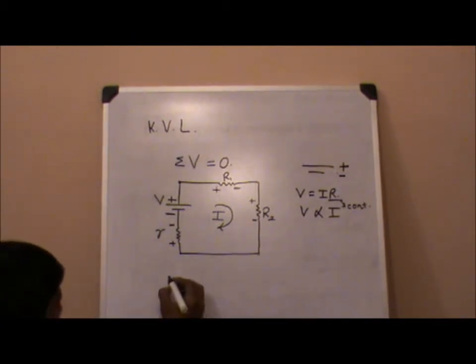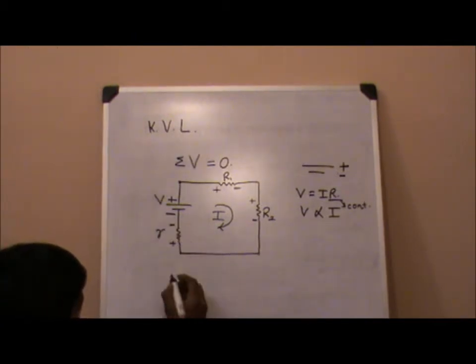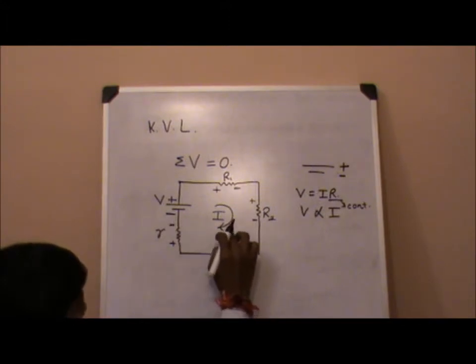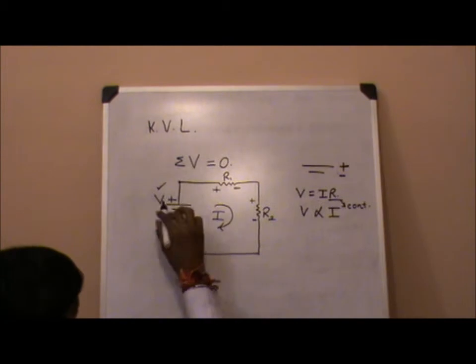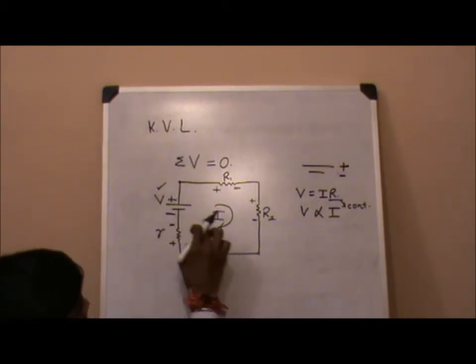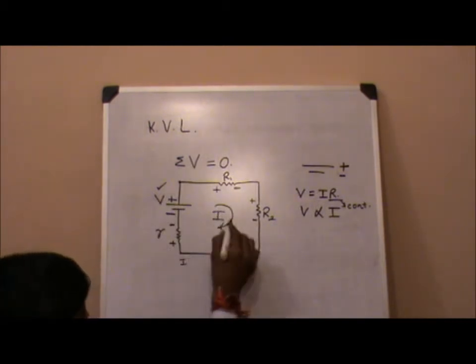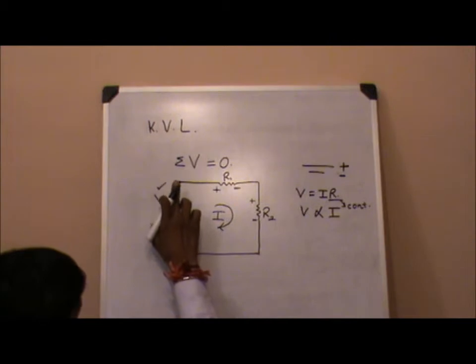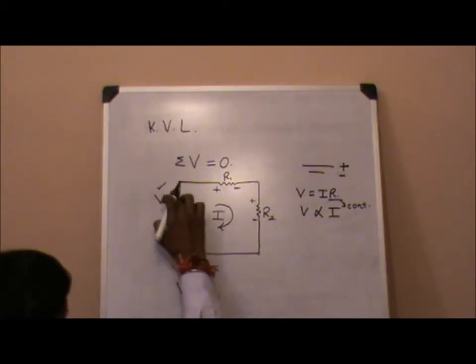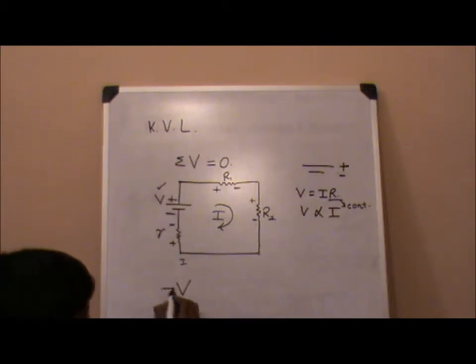Now going into the KVL, we will write the equation V. If we assume that V, due to this battery with EMF V, current I is flowing in the circuit. So we will write KVL for this particular circuit. V, as the current is going in upper direction, that means positive sign is imposed in the current. So we're taking plus V.